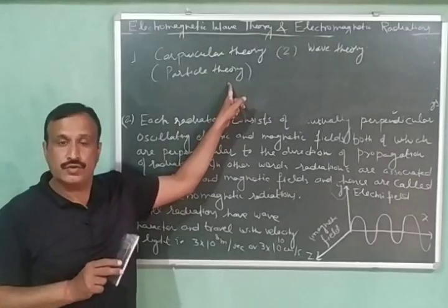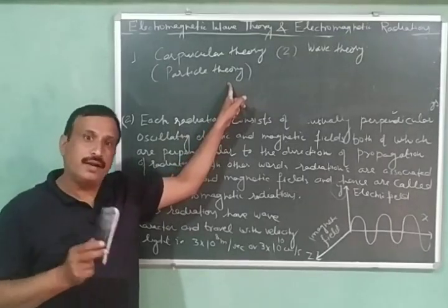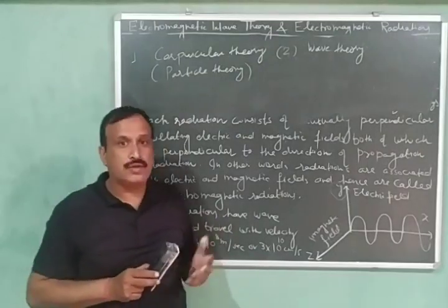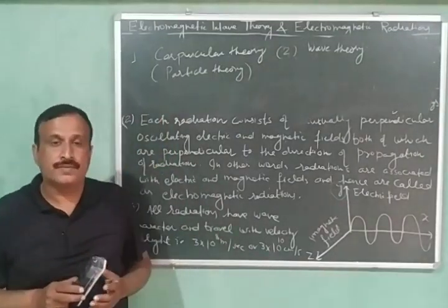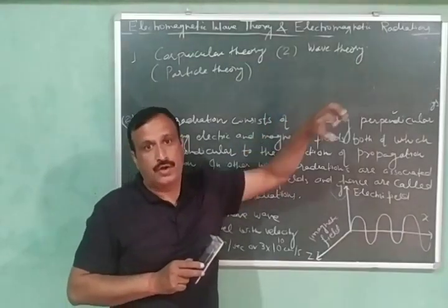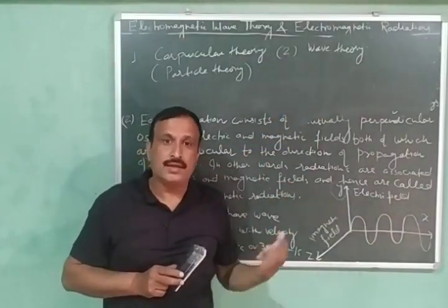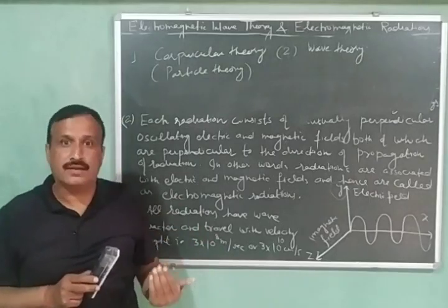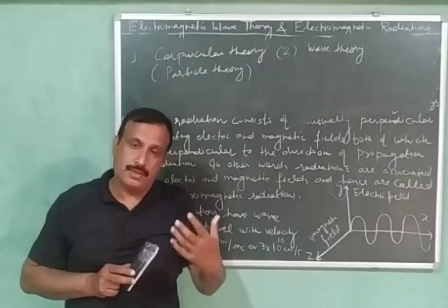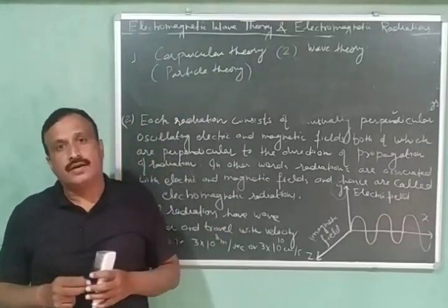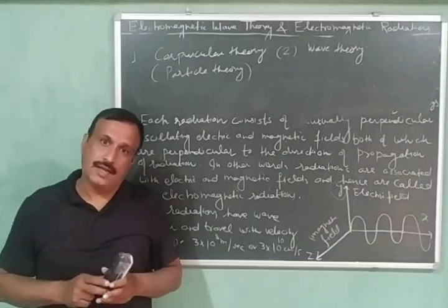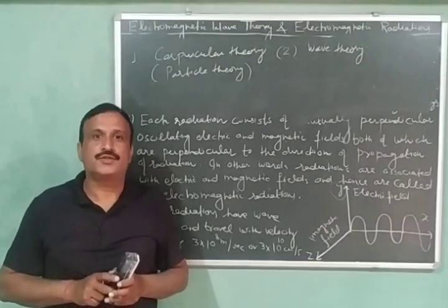Properties like photoelectric effect and black body radiations are explained on the basis of corpuscular theory or particle theory. Because, according to this theory, the radiations will have particle character. Whereas, the properties like diffraction and interference are explained on the basis of wave theory. Because, according to this theory, the radiations have wave-like character. As we discussed here, radiation also have wave character. We can say that radiations have dual character. They possess particle as well as wave character.